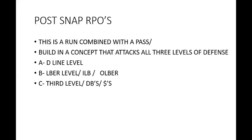When we talk about post-snap RPOs, it's a run combined with a pass — a built-in concept that attacks all three levels of defense. We use an 'A' word for the front level — the D-line. We use a 'B' word for the linebacker level, inside or outside backer. We tag a run with a B word so we know we're keying the backer. A 'C' word is our third level — a lot of people are experimenting with what's called a 'C route,' trying to get behind the boundary safety supporting the run and attacking the DB. So we look at first level, second level, and third level.